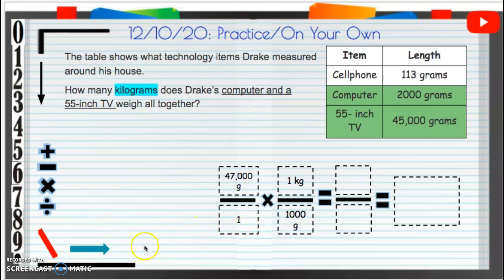Now we're going to multiply. First off, we can cancel out the grams. So now up top, 47,000 times one is going to be 47,000, and we're going to keep those kilograms.